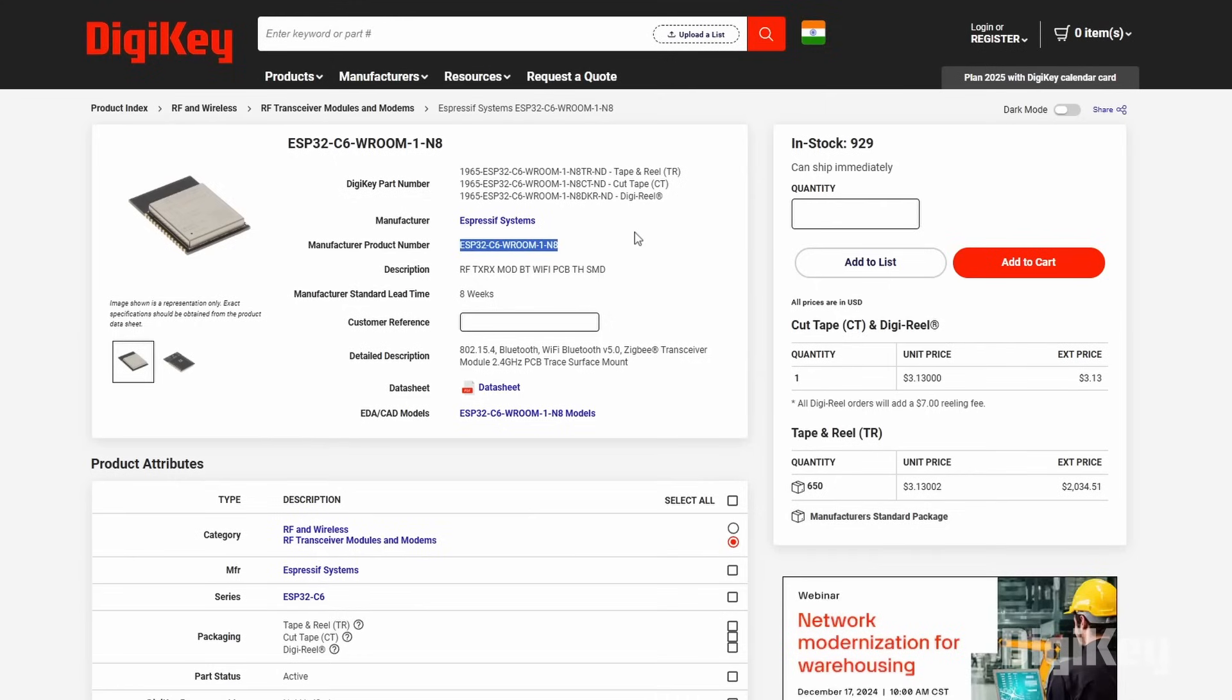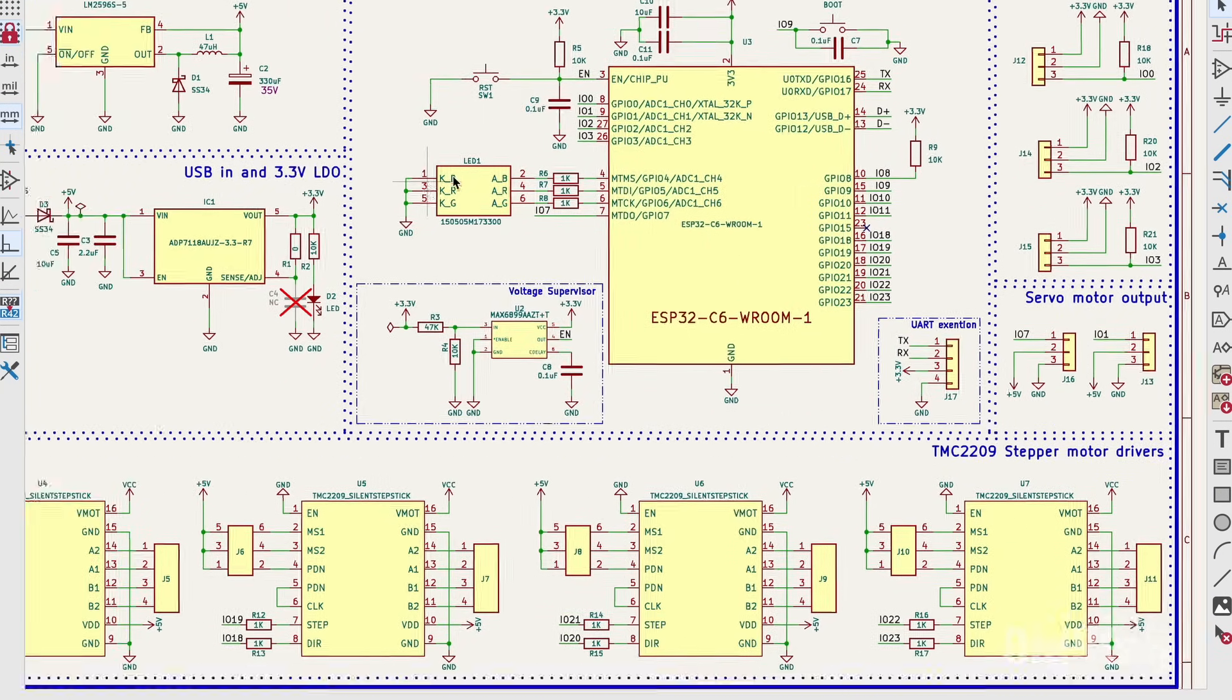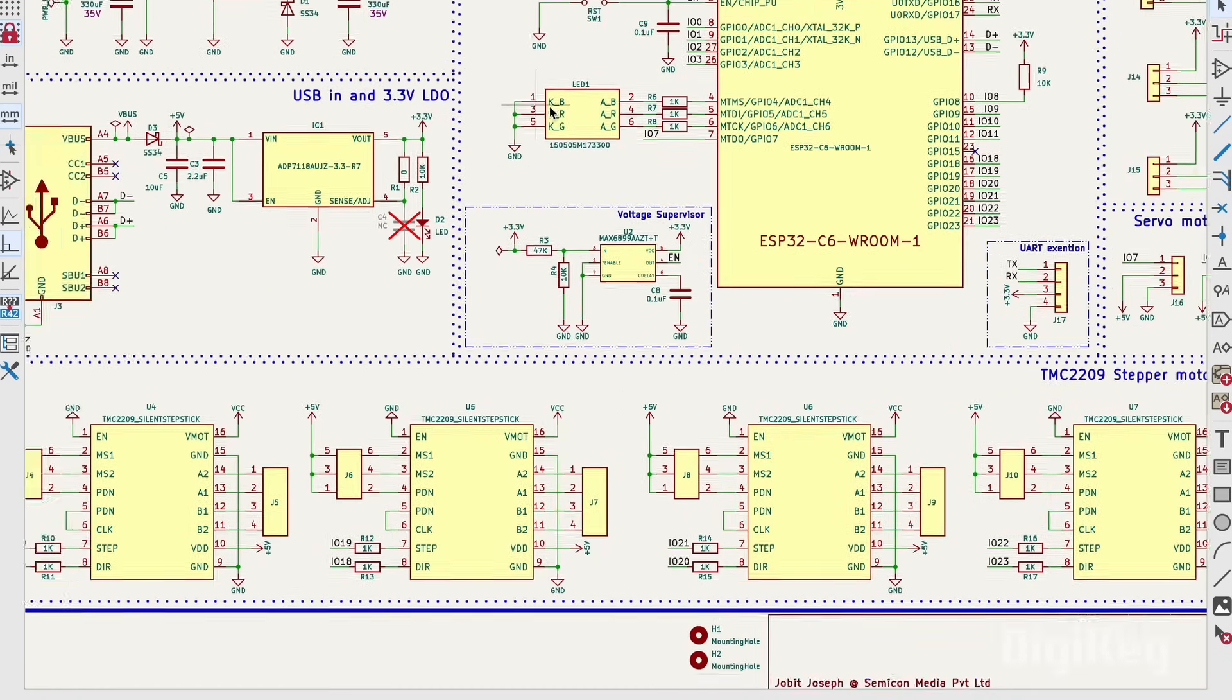This ESP32C6 SOC here is the main brain of our circuit. It's used for controlling our robotic arm and even has Bluetooth and Wi-Fi capabilities if needed for future use.